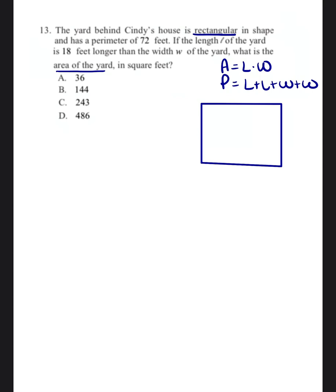So what they're asking us to do essentially is just figure out what is the length and what is the width. So if you look at it, it says the length of the yard is represented with L, and it's 18 feet longer than the width.